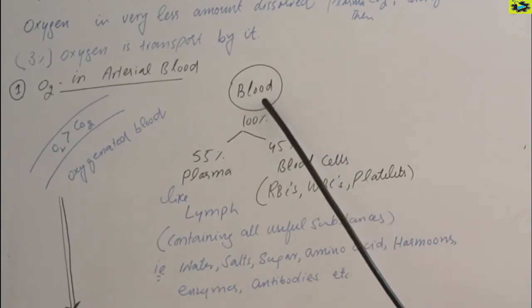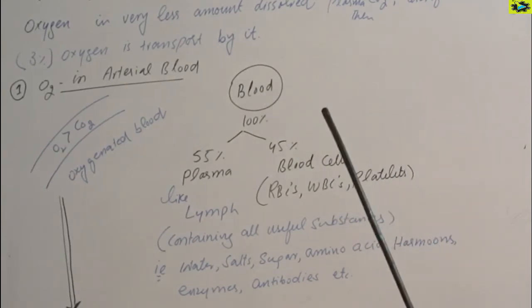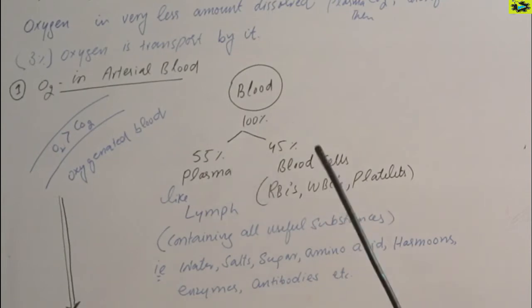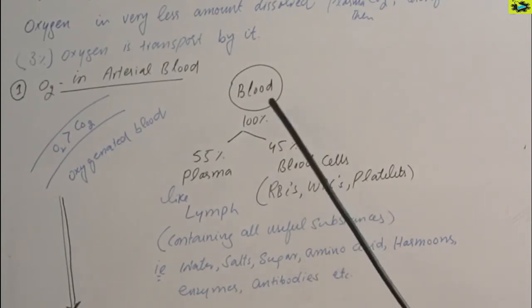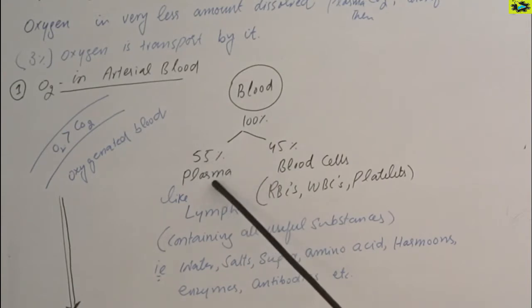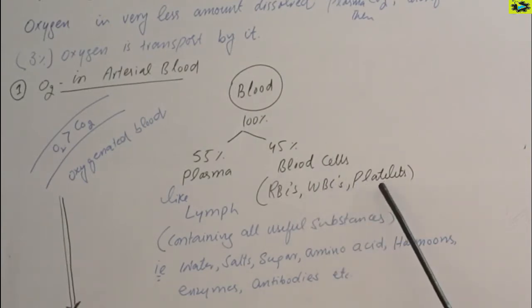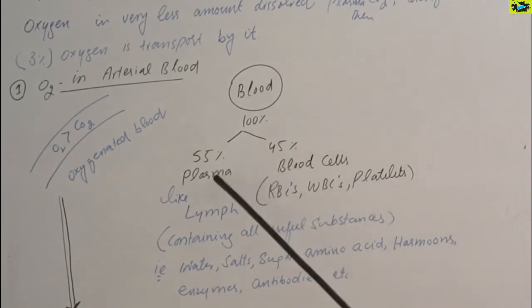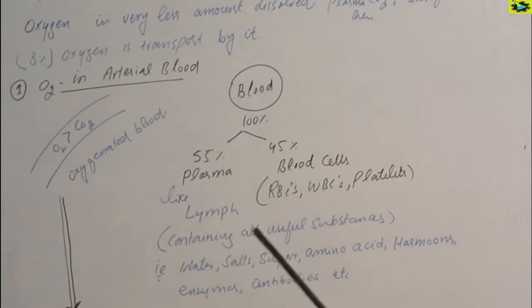The blood contains how much blood plasma and how much blood cells. If the blood is 100%, so about 55% is the blood plasma, while the rest of the 45%, it contains the blood cells like in the form of RBCs, WBCs and platelets.